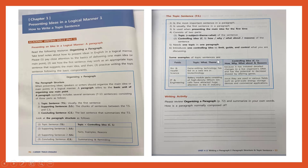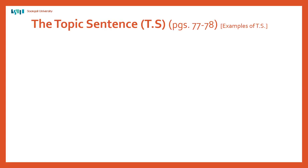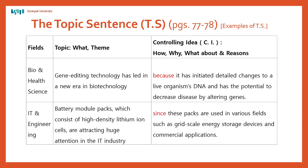Have a look — it says some examples of topic sentences. I'm going to put this on the next slide and make it bigger. So this is from page 77. We've got two different fields with some topic sentences including the controlling idea. The first one is bio and health science. Let's read it: 'Gene editing technology has led in a new era in biotechnology because it has initiated detailed changes to a live organism's DNA and has the potential to decrease disease by altering genes.' If this is your field, this is an example of a good topic sentence.